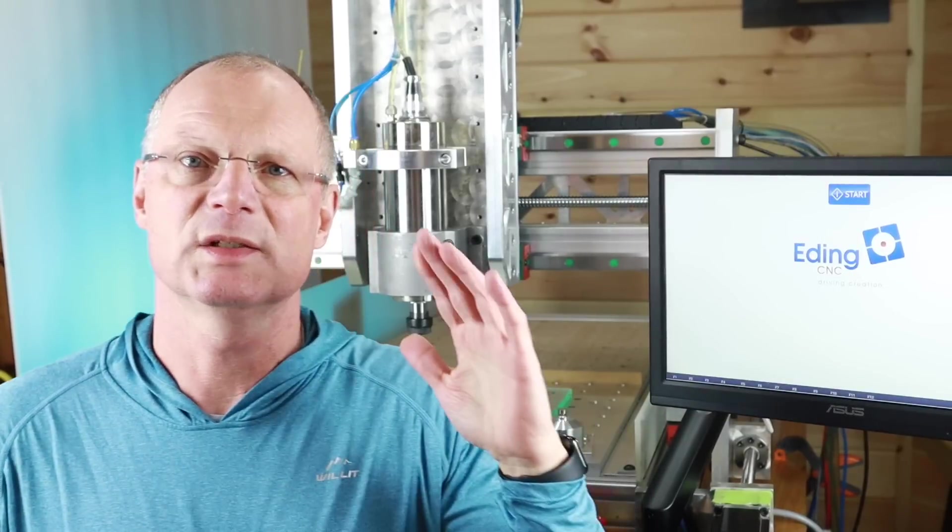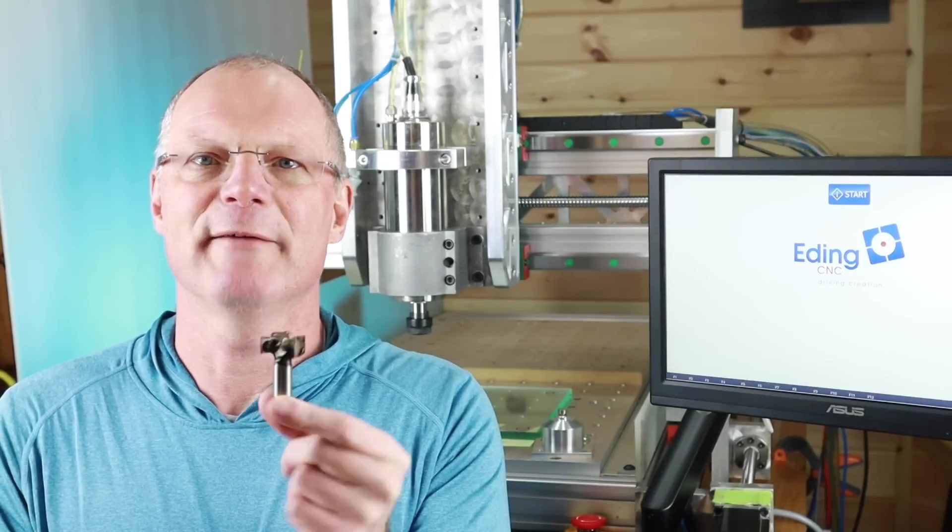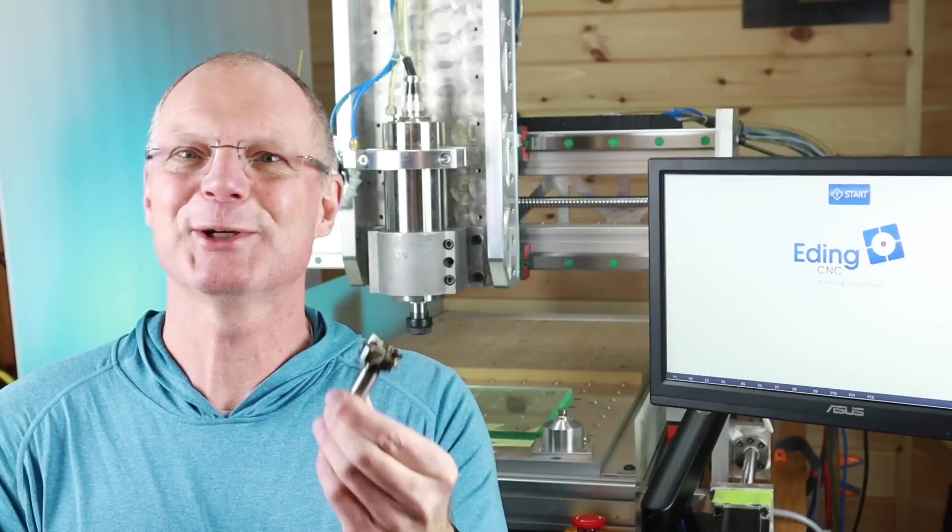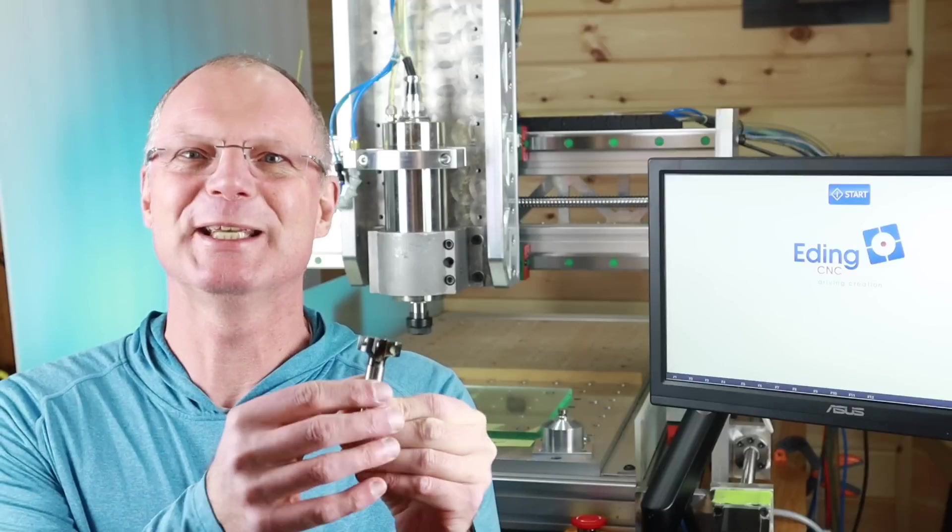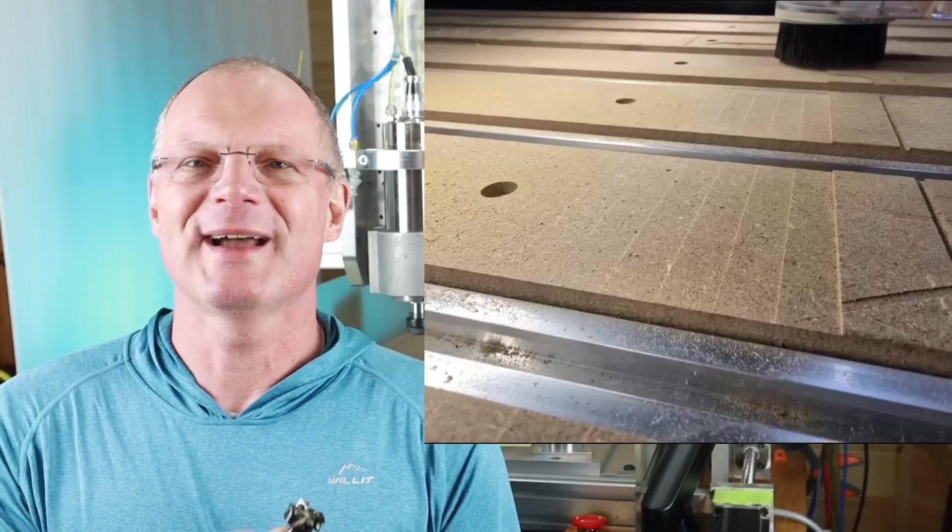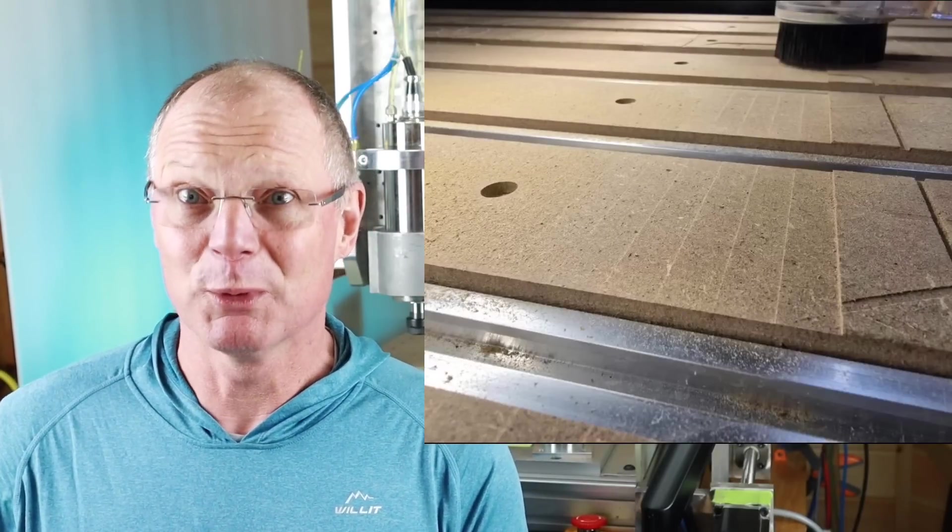If your spindle is grossly out of alignment and tilted, this normally rears its ugly head for the first time when you are facing your spoil board. That's because you're using a large tool like this 30 millimeter facing tool I have right here, and it will make a nice staircase pattern on your spoil board and you're asking, hey what is going on here?